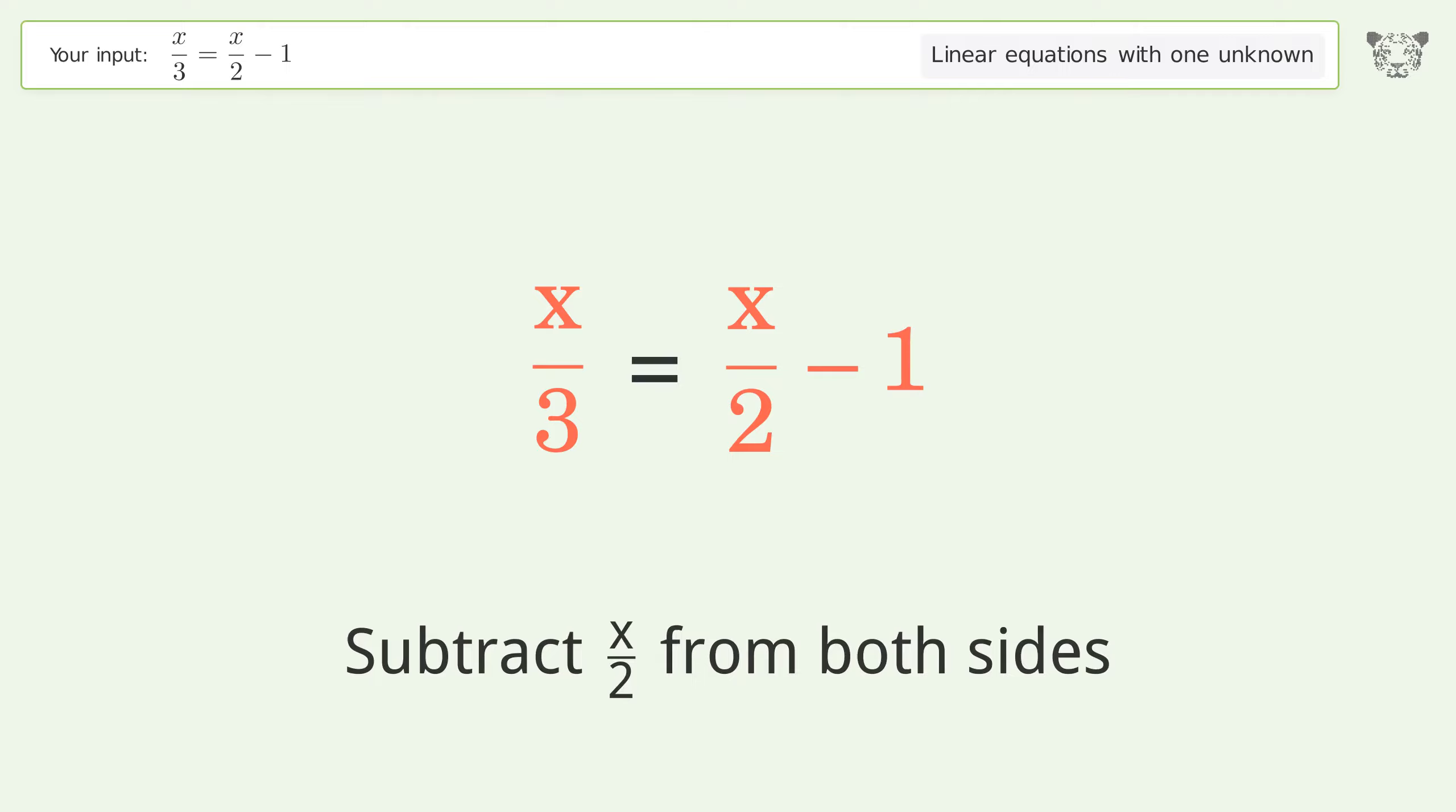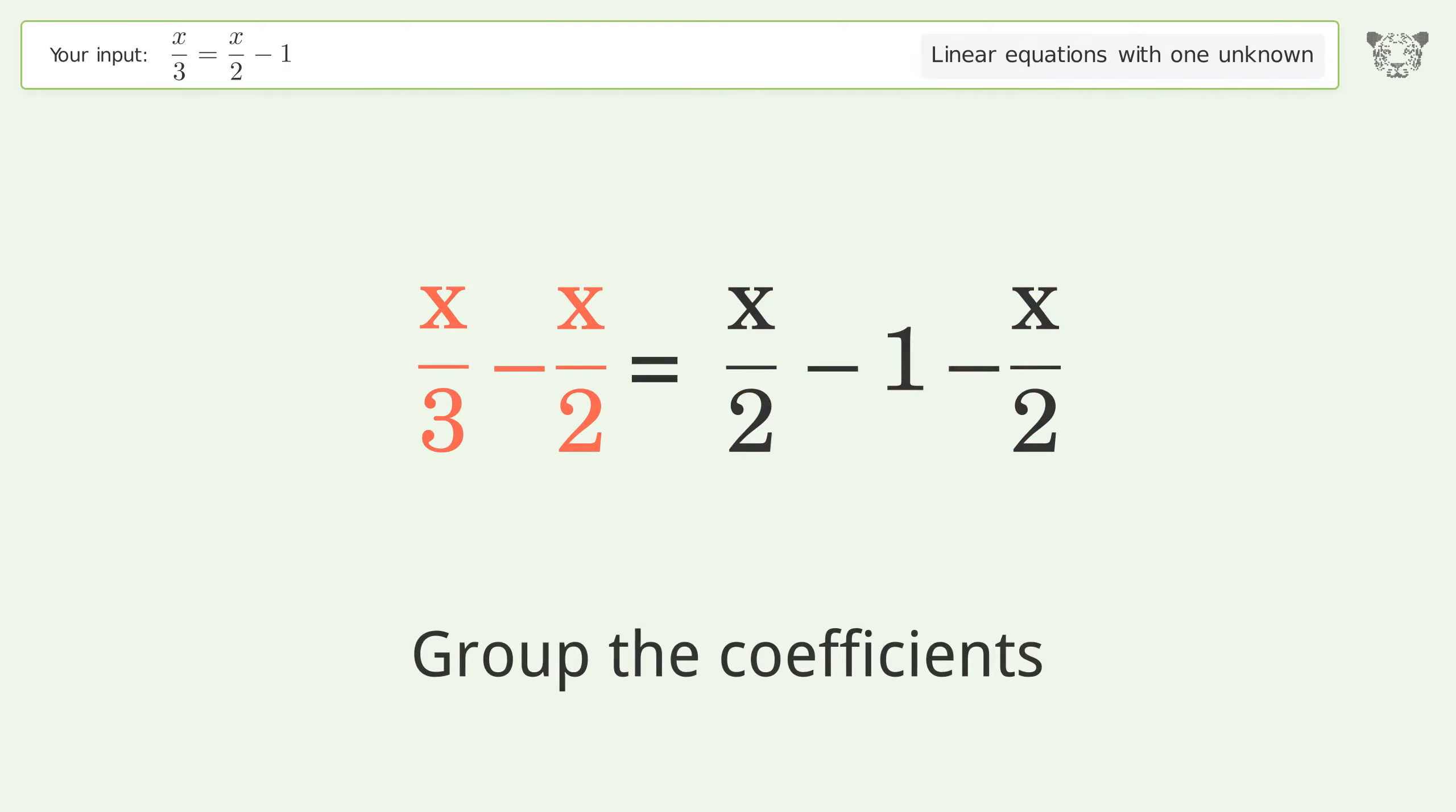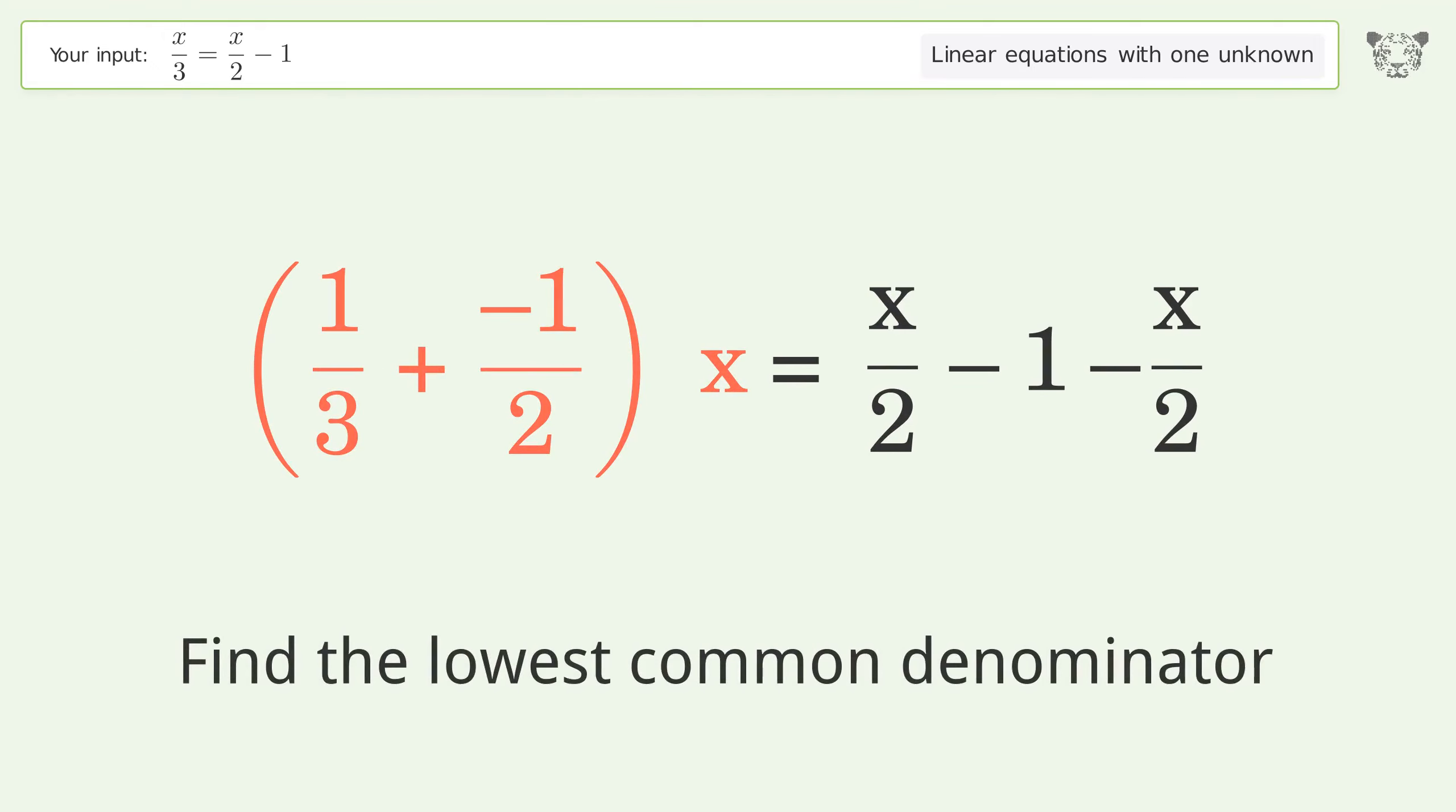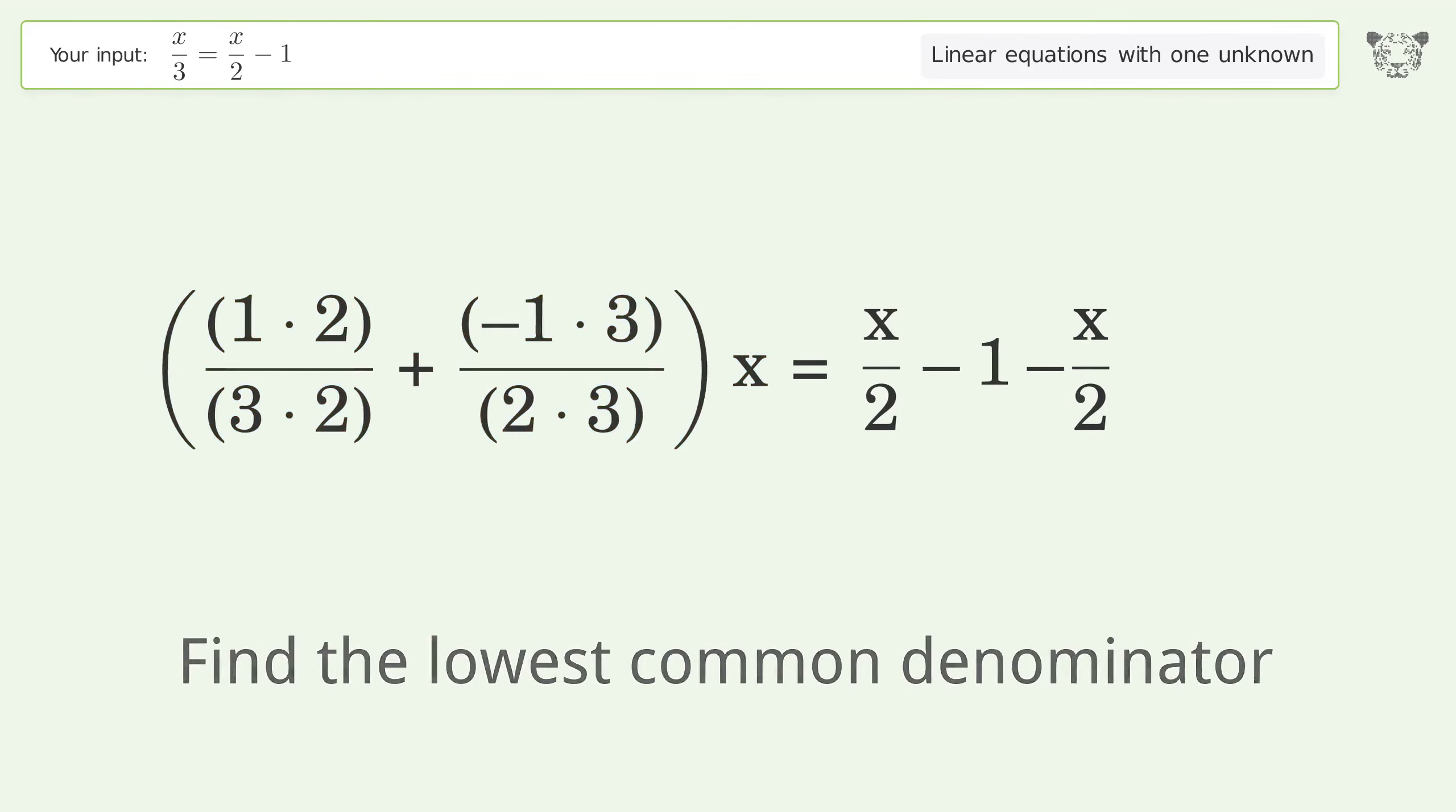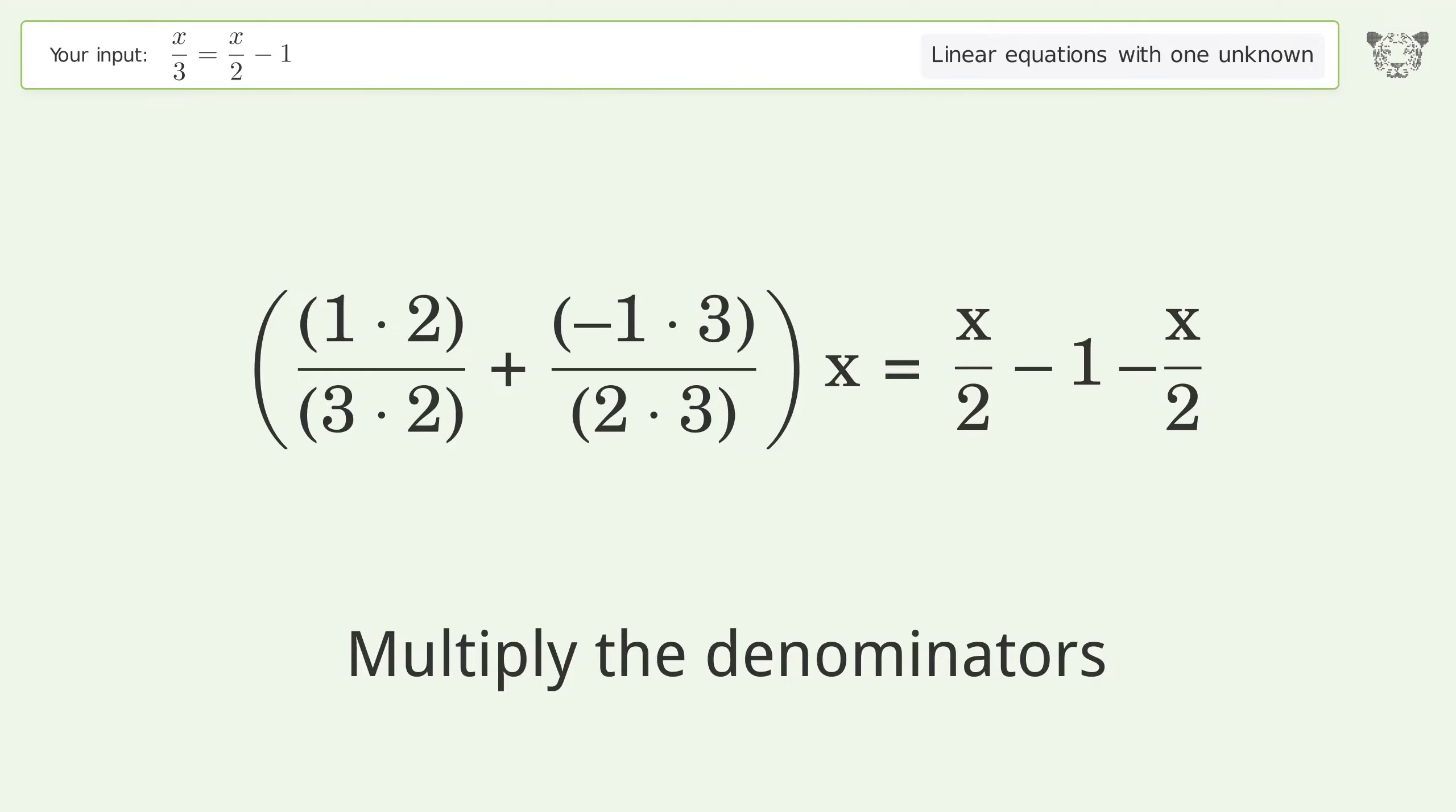Subtract x over 2 from both sides. Group the coefficients. Find the lowest common denominator. Multiply the denominators.